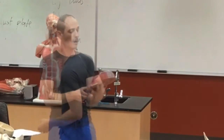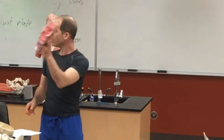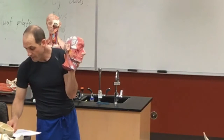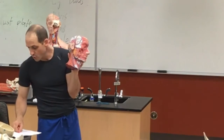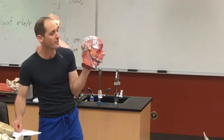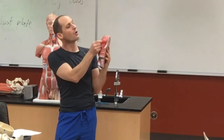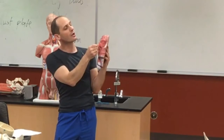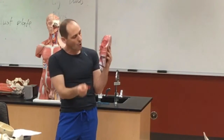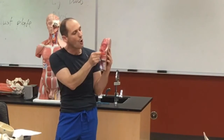Muscles of the face. Here's a head, and we do a few. We do orbicularis oculi and orbicularis oris. Orbicularis means round, oculi is the eye. So orbicularis oculi is the round muscle around the eye. Orbicularis oris — oris is mouth — is the round muscle around the mouth.